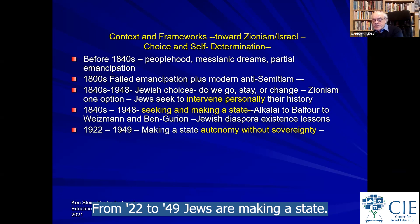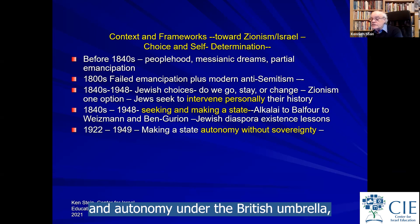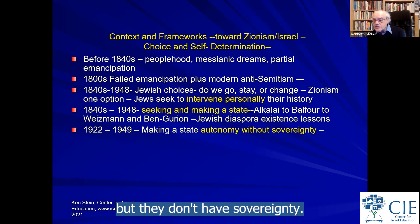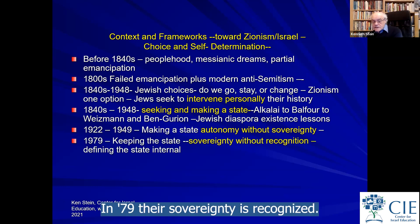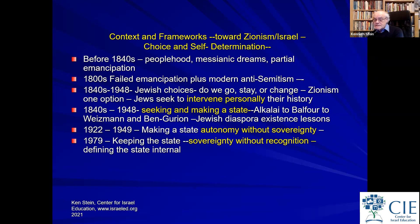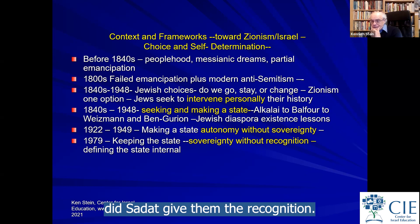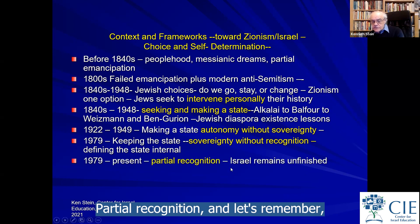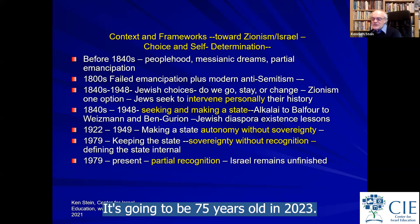From 1922 to 1949, Jews are making a state. They develop self-governance and autonomy under the British umbrella, but they don't have sovereignty. In 1949, sovereignty is recognized. But between 1949 and 1979, they had sovereignty without full recognition — and only in 1979 did Sadat give them that recognition. In other words, it's a gradual process of partial recognition.